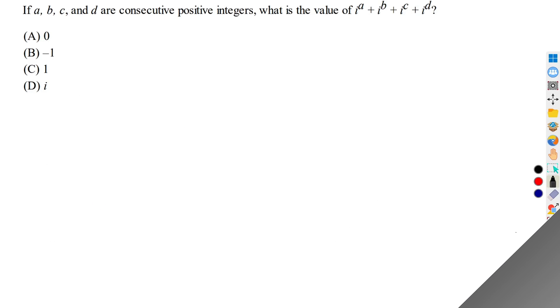Given a, b, c, d are consecutive positive integers, what is the value of this expression? Here i is an imaginary number, its value is given by square root of minus one. Now a, b, c, d are consecutive positive integers, so we can write b as a plus 1, c as a plus 2, and d as a plus 3.